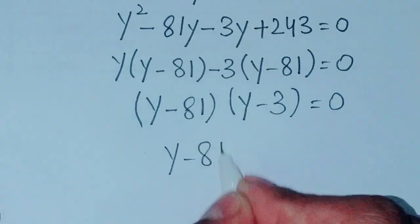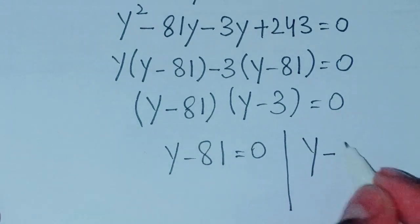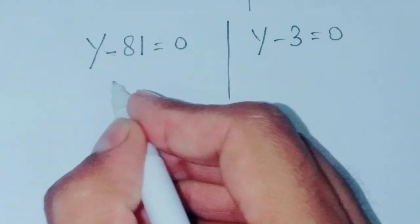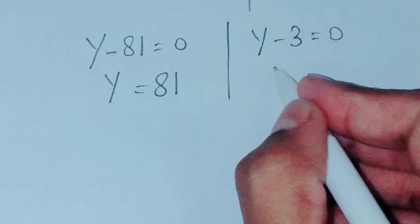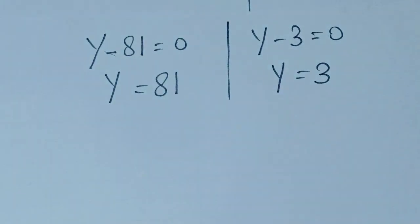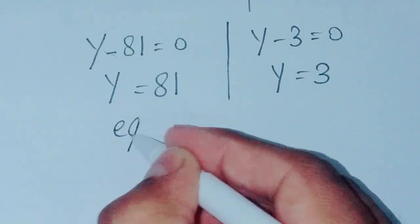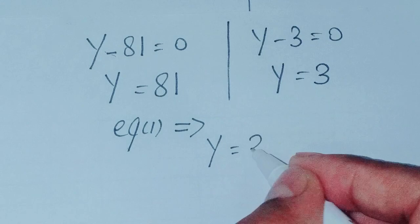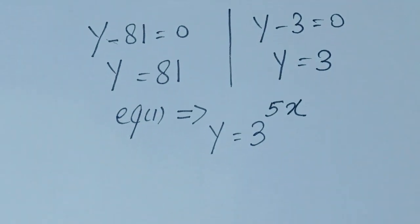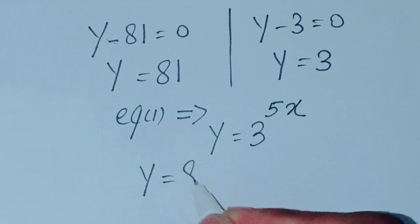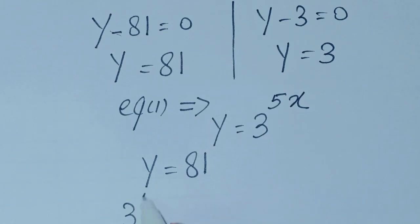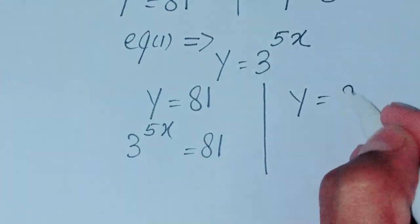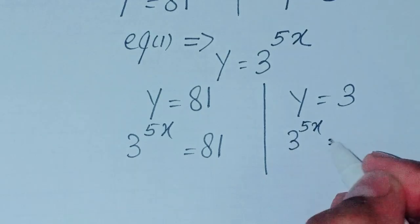Setting each factor to zero: y minus 81 equals 0 gives y equals 81, and y minus 3 equals 0 gives y equals 3. From equation 1, y equals 3 power 5x. For y equals 81: 3 power 5x equals 81 equals 3 power 4. For y equals 3: 3 power 5x equals 3.